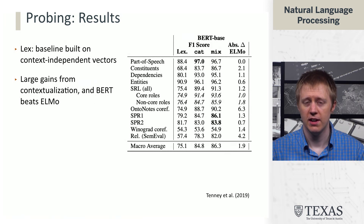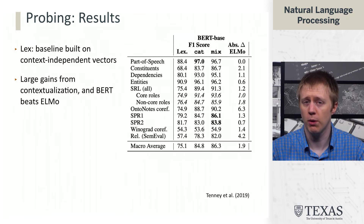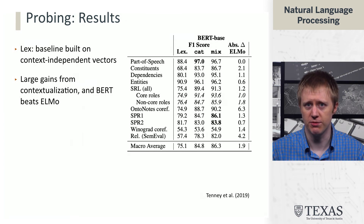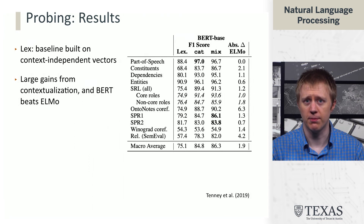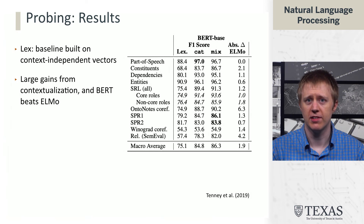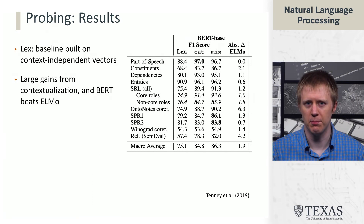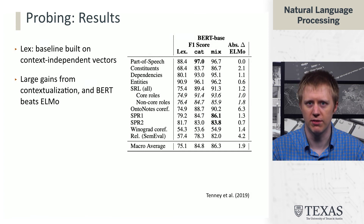If we look at the part-of-speech row at the top, the individual predictions from context-independent representations aren't very good — you can't tell a lot about a word's part of speech in isolation. But the predictions from the contextualized representations are quite good, around 97. The takeaway is that this model seems to preserve part-of-speech information, because we can read it out using a fairly simple classifier. Looking at constituency, results are a bit lower, which may indicate that aggregating over spans is less reliable and the model has less of a sense of the relation between different units — though it's still doing quite well given that we're using off-the-shelf representations fed into a shallow model.